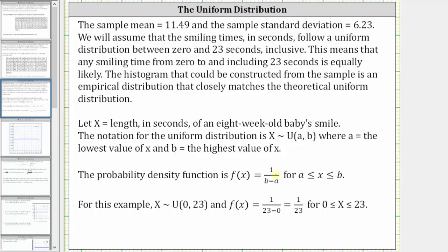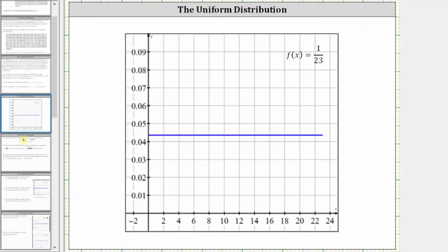For our example, we have a uniform distribution where a is equal to zero and b is equal to 23, and therefore the probability density function is f(x) equals one twenty-third, which we can now graph on the coordinate plane.